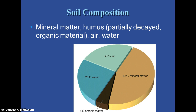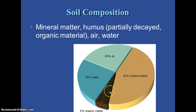The composition of soil is still mainly mineral matter — about 45% — and then 5% organic matter. The other half of the soil is the pore space, and it's either going to be filled with air, water, or both, depending on the climate or weather conditions that have occurred.